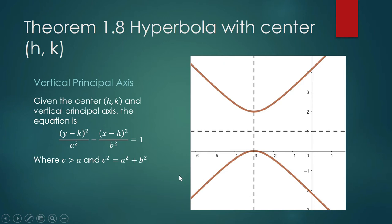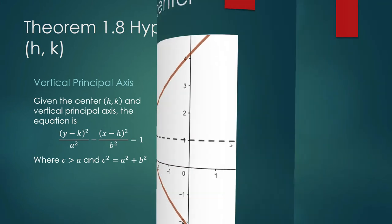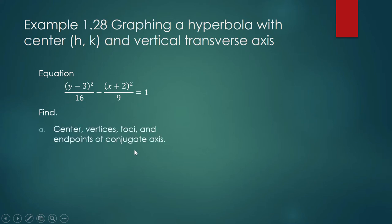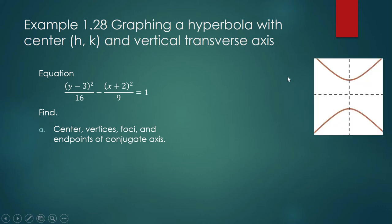So our hyperbola might look something like this — the transverse axis is vertical. We shall now graph a hyperbola with center HK where the transverse axis is vertical. We shall find the center, the vertices, the foci, and endpoints of the conjugate axis. In one corner of your paper, doodle this hyperbola because that will tell you the orientation of the transverse axis.